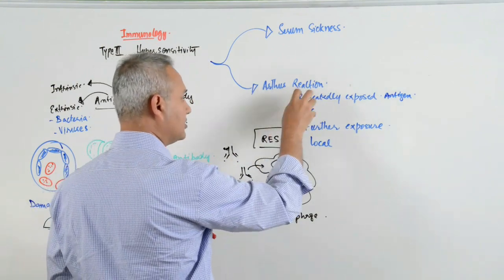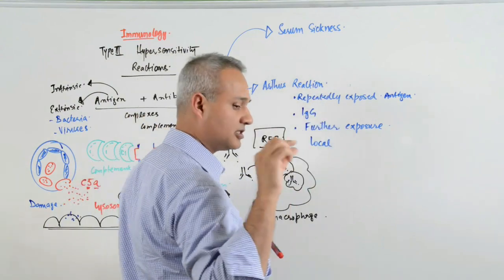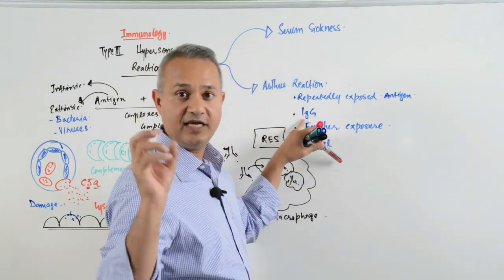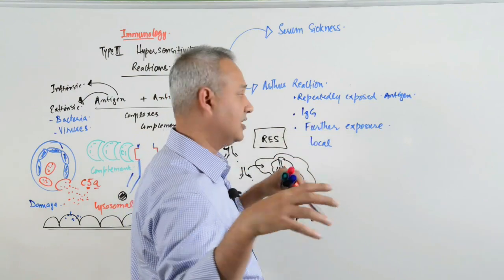Again, this is immune antigen-antibody complexes deposited in one part. Antibodies are already present, which antibodies? IgG. They attack and that area becomes sore.